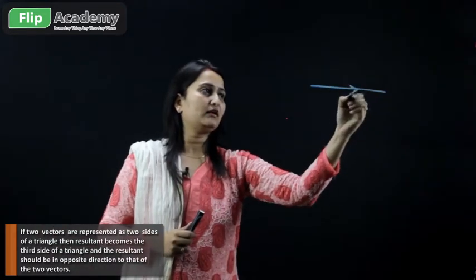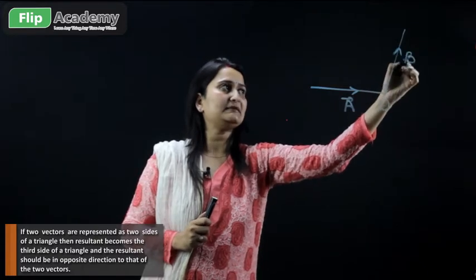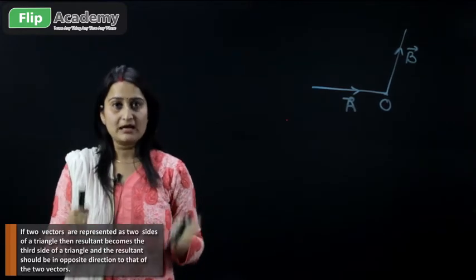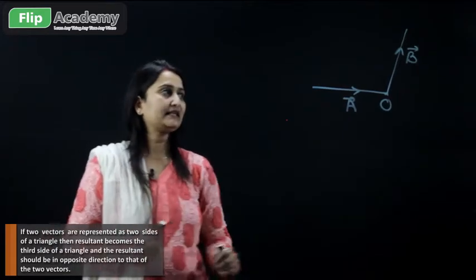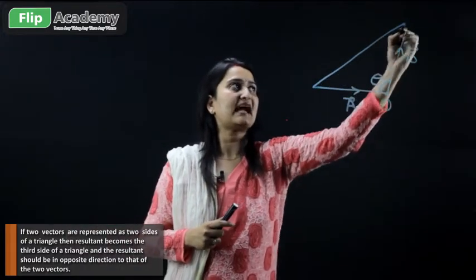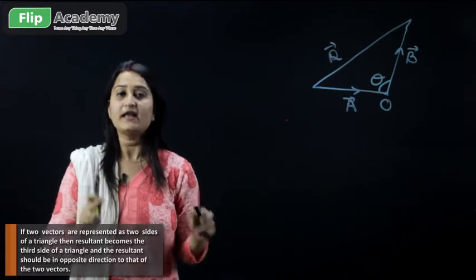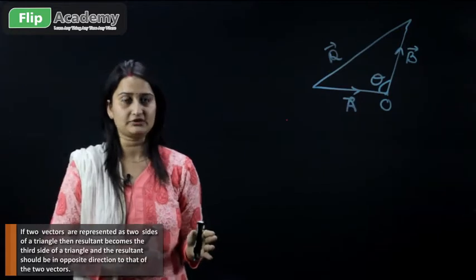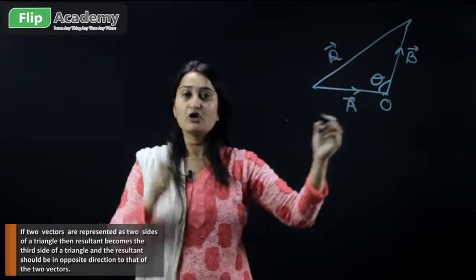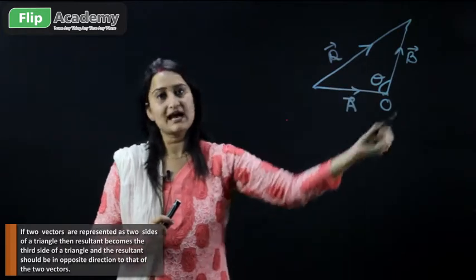Let's explain this graphically. Here is vector A and vector B meeting at point O. A is a convergent vector and B is a divergent vector, so the parallelogram law fails — move on to the triangular law. The resultant of A and B is the third side of a triangle. Since A and B are both in the anti-clockwise direction, the resultant must be in the clockwise direction.